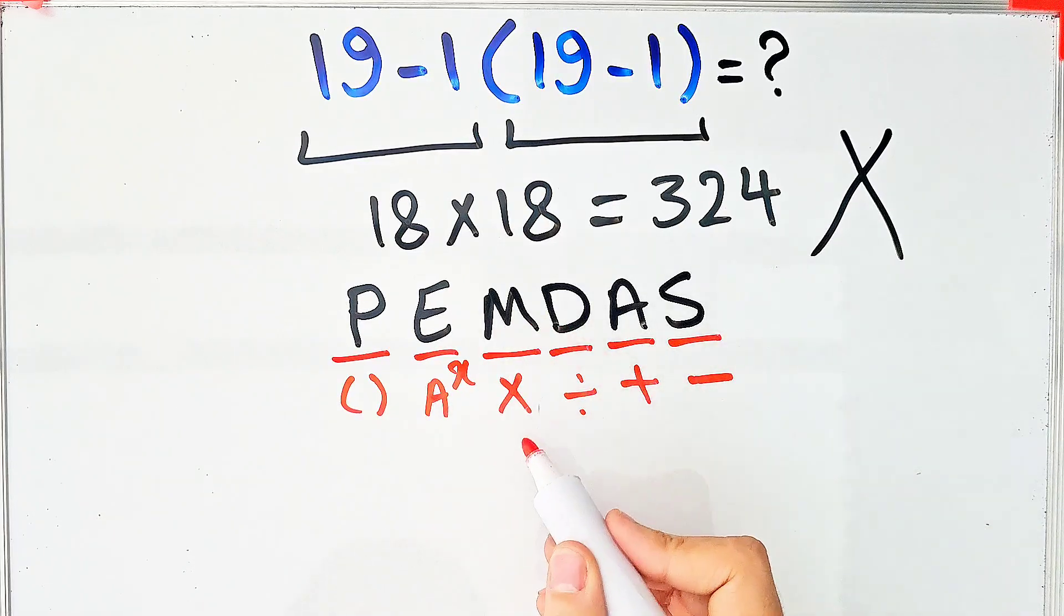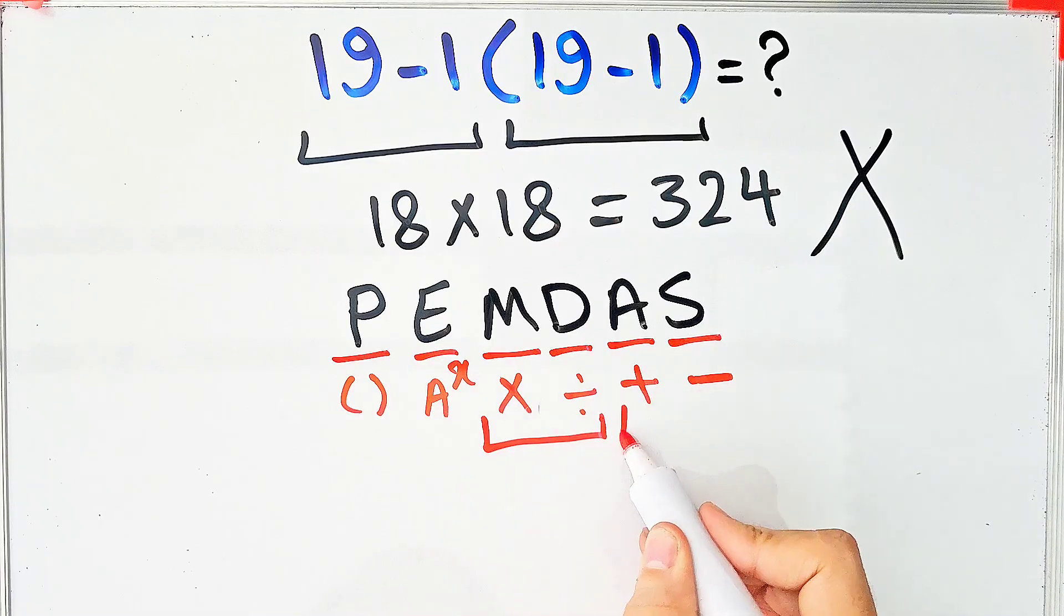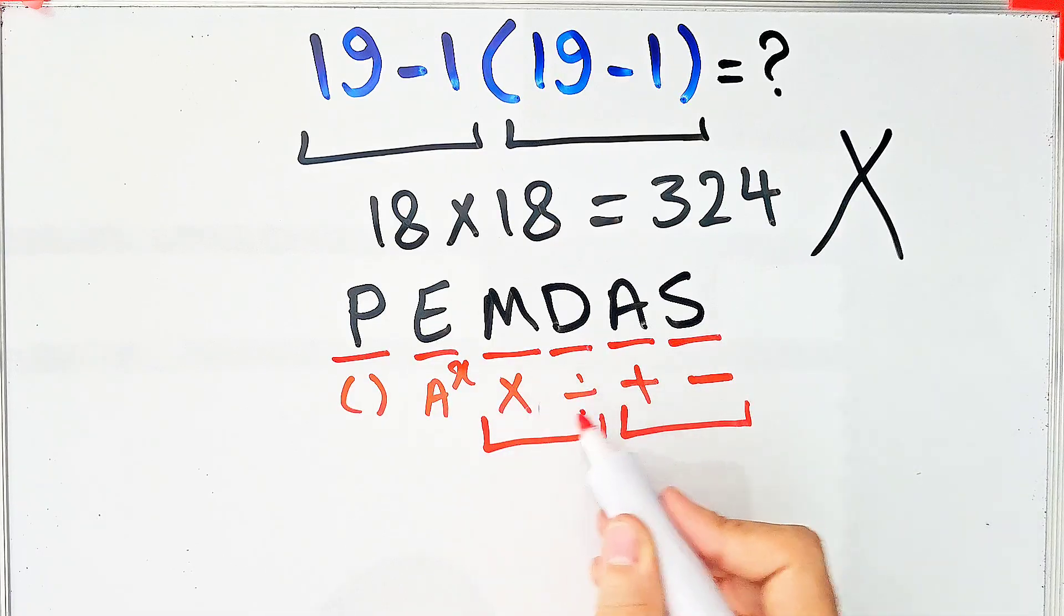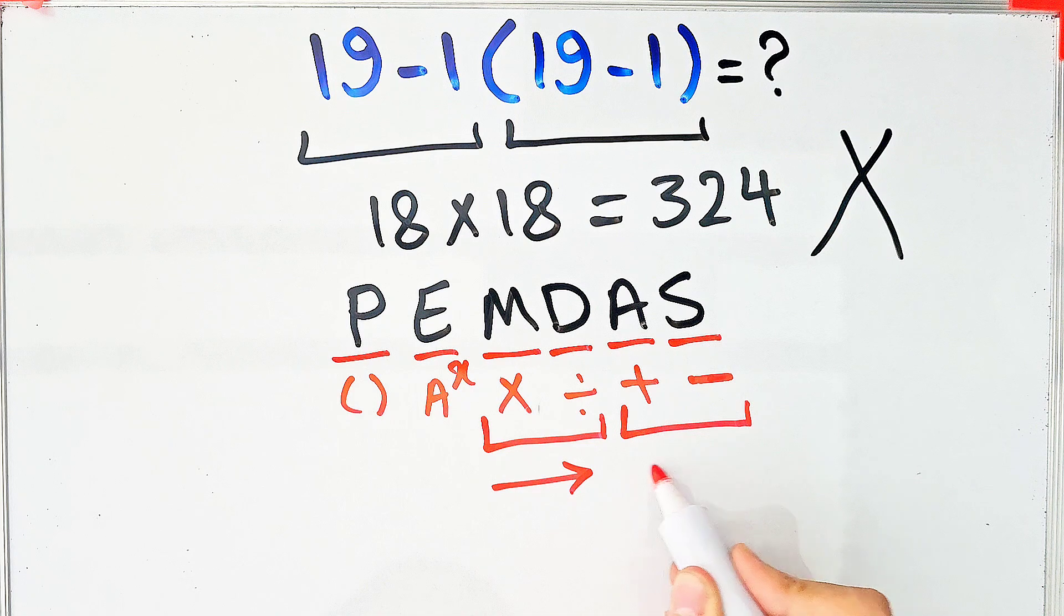Multiplication and division have the same level of priority, also addition and subtraction have the same level of priority. When we have both in an expression, we start from the left and simplify the question.